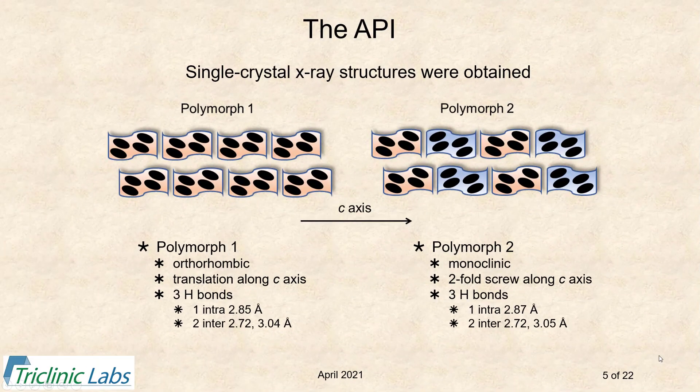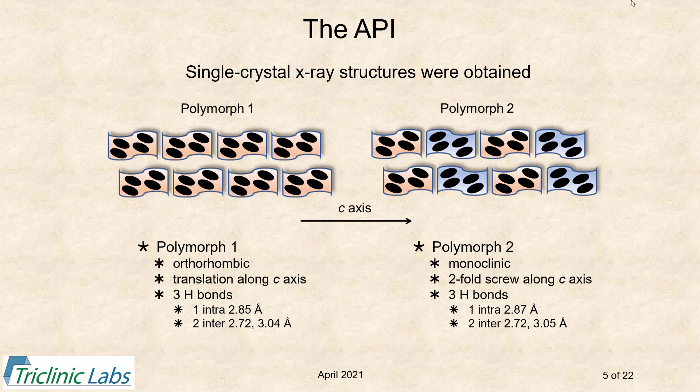We obtained crystal structures of both polymorph one and polymorph two and found those structures are very similar, as were the phenobarbital structures shown earlier. In this case, there is only one real difference between the two: along the C-axis, polymorph one has simply a translation, while polymorph two has a two-fold screw. As shown in the cartoon, they're very similar—it's just an inversion of one compared to the other. The number and lengths of hydrogen bonds are essentially the same in both structures.